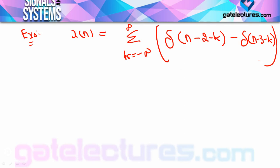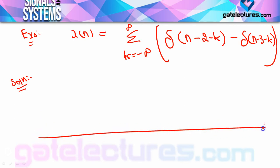Suppose this signal is periodic — if it is periodic, then after how many samples is it repeating? To check, if I go to draw this discrete time signal in the solution, you need to understand that this discrete time signal has a summation from k = -∞ to +∞, so you cannot solve it for every k. Take a range of k — suppose I take k from -1 to +1 first.